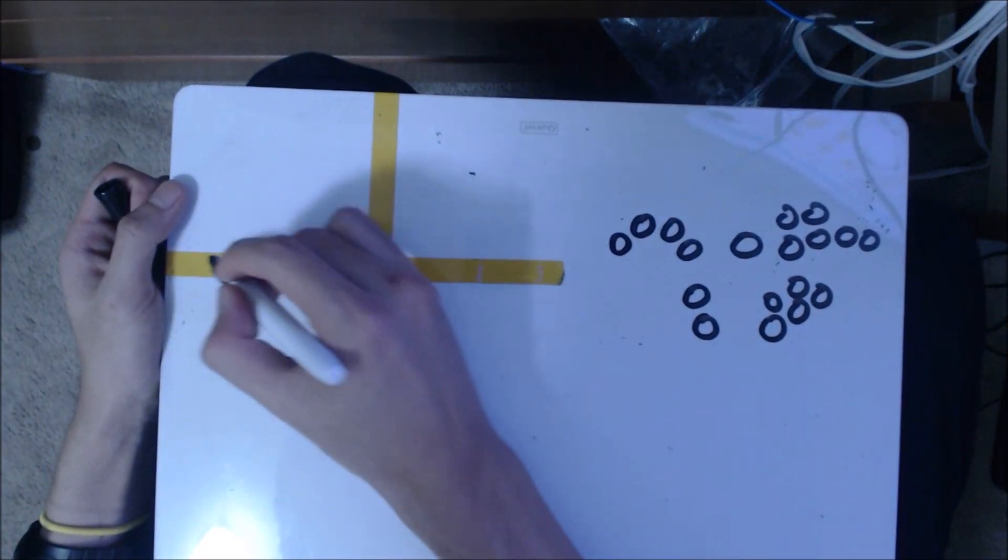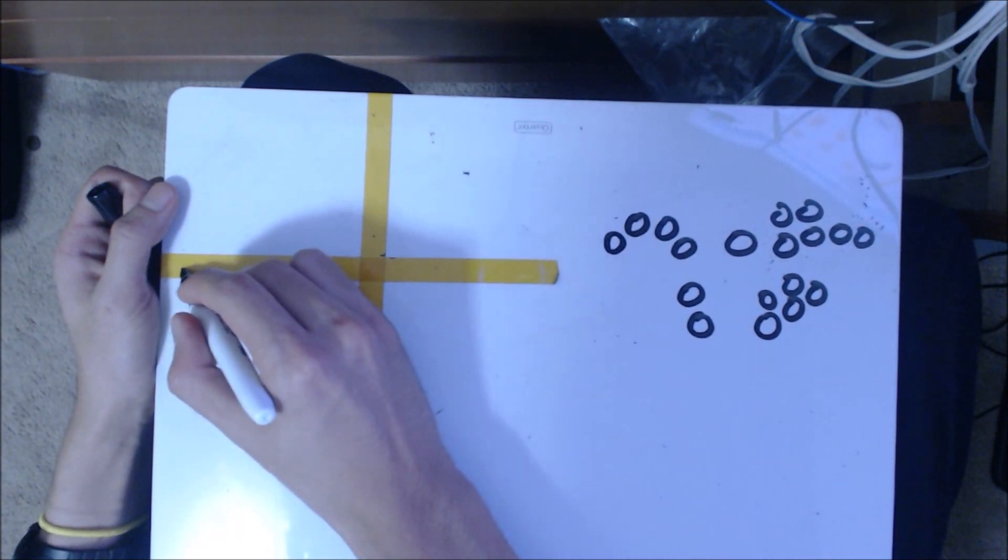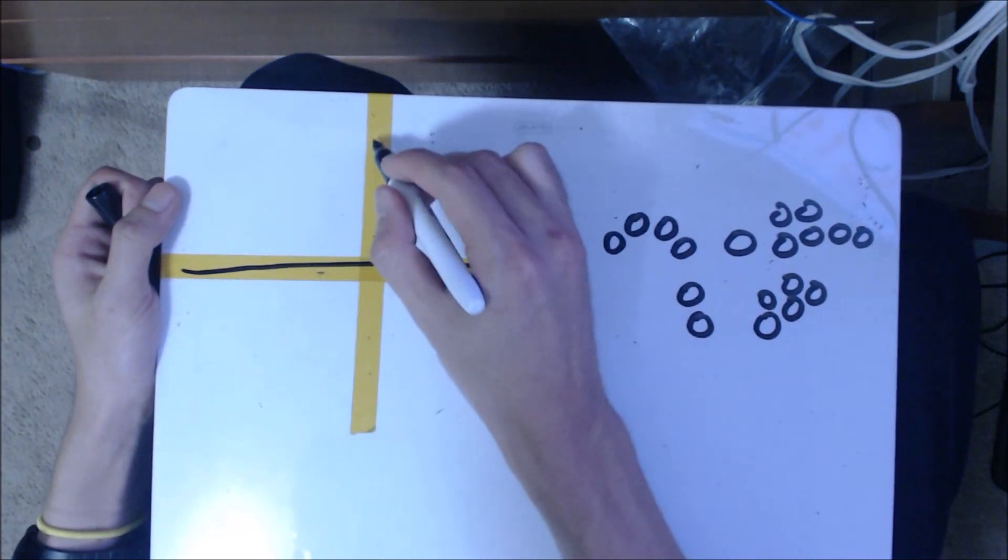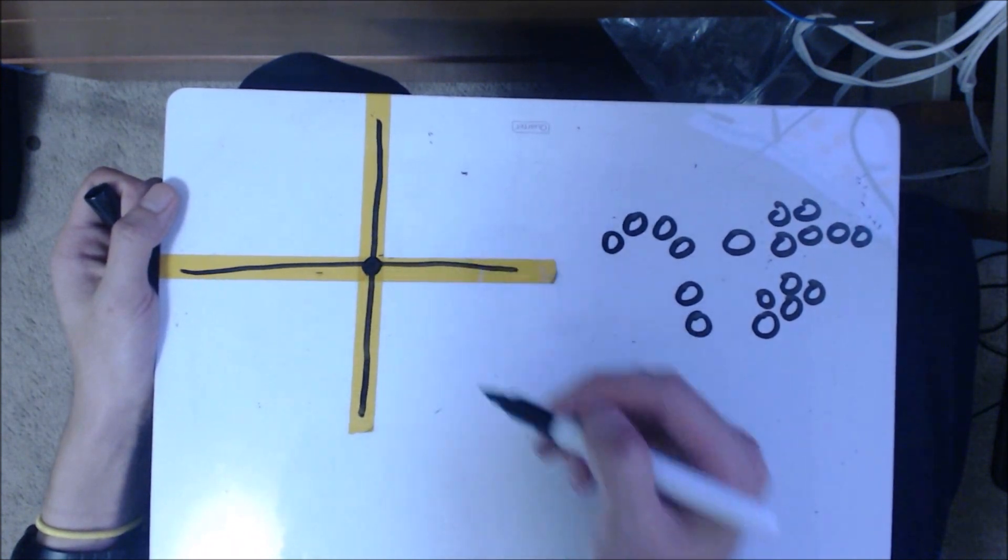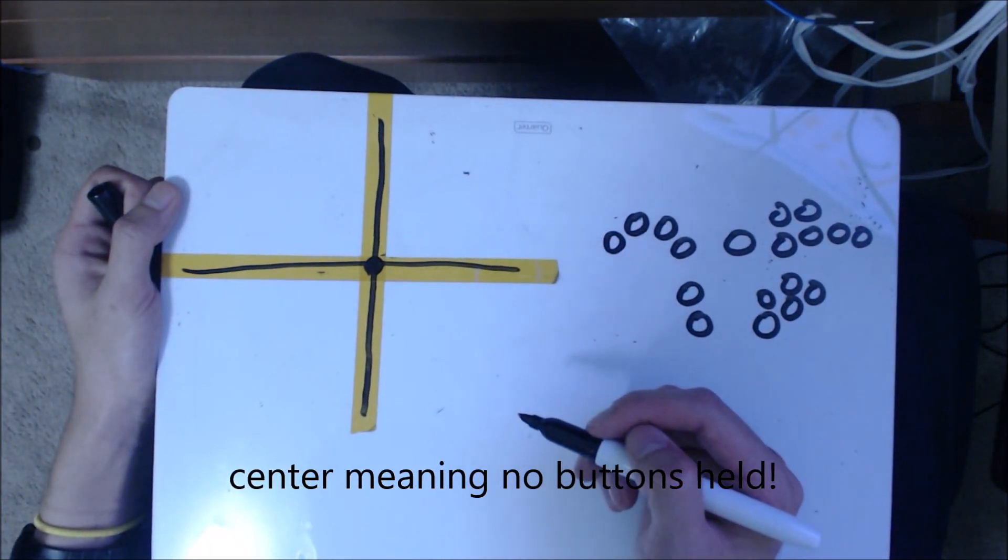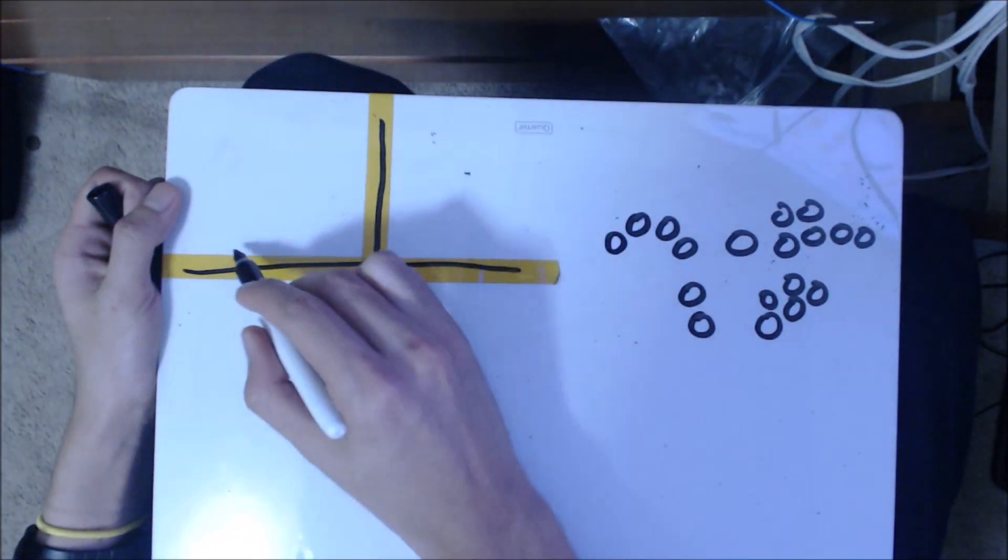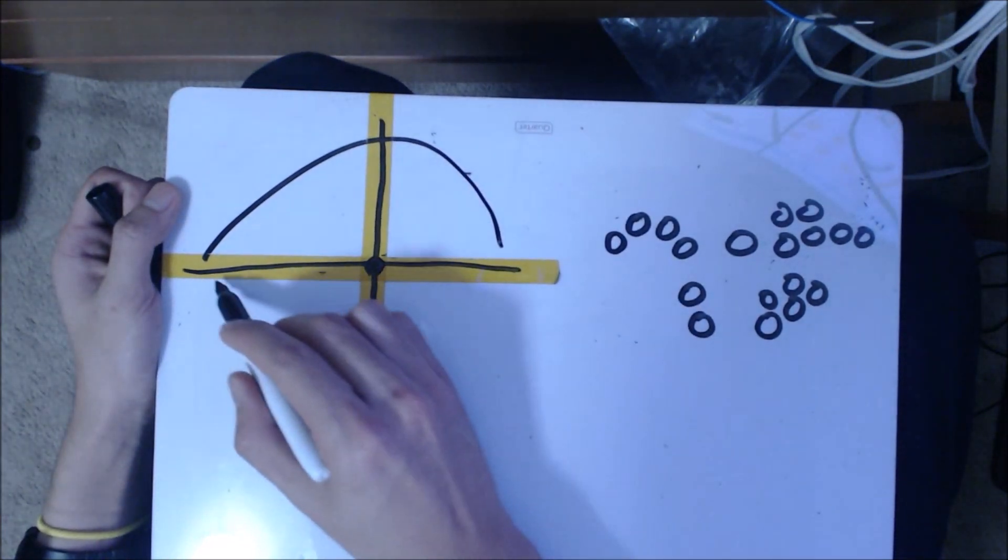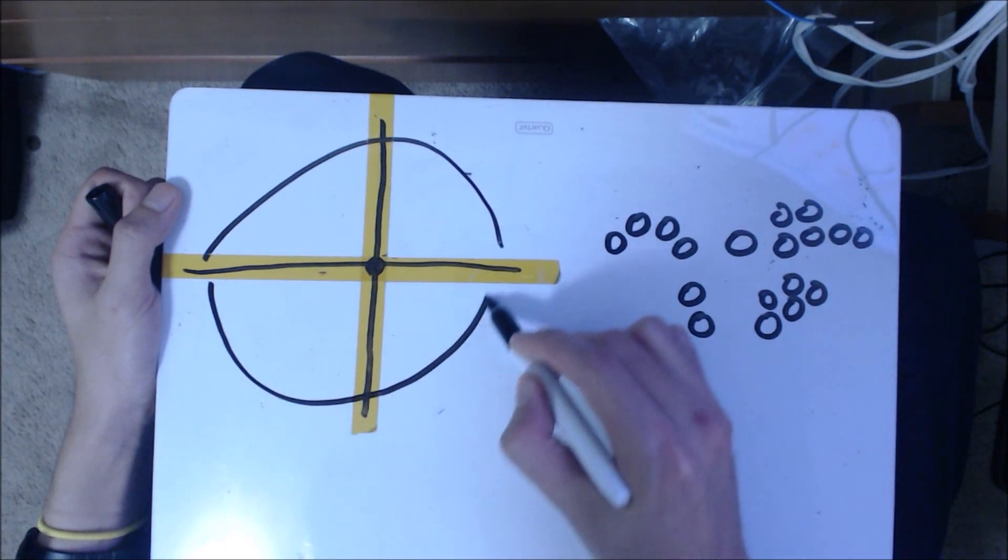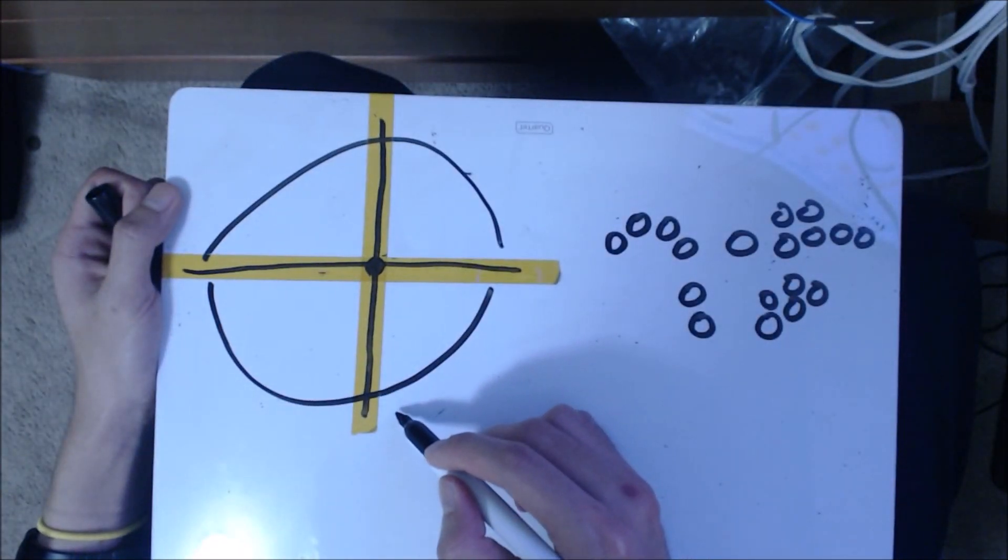If you pretend this was your melee axis, here's your x-axis, here's your y-axis. This is going to be your center right here. If you hold up you're going to be entering these two quadrants right here. If you hold down you're going to be entering these two quadrants.